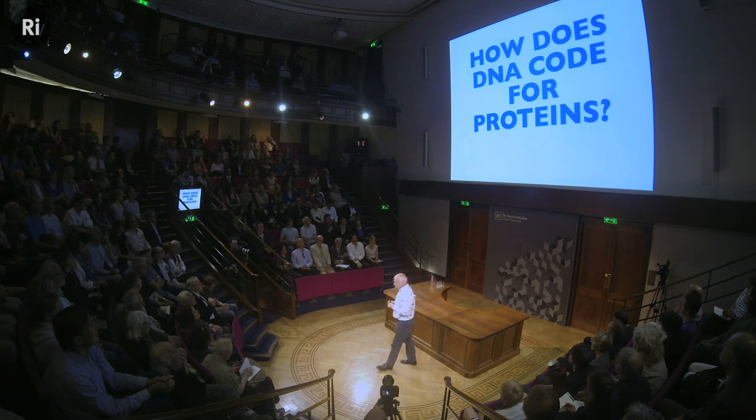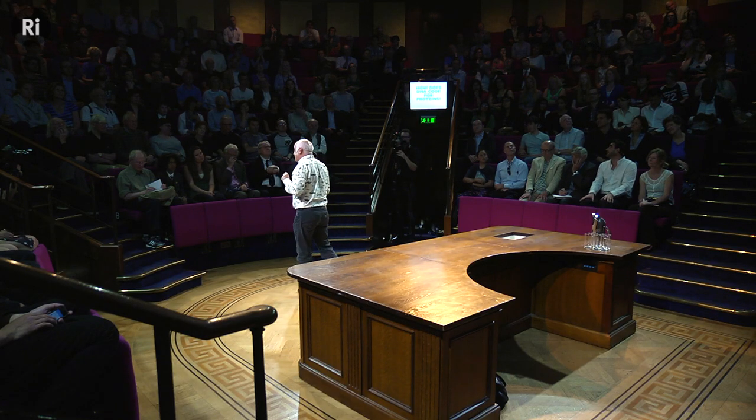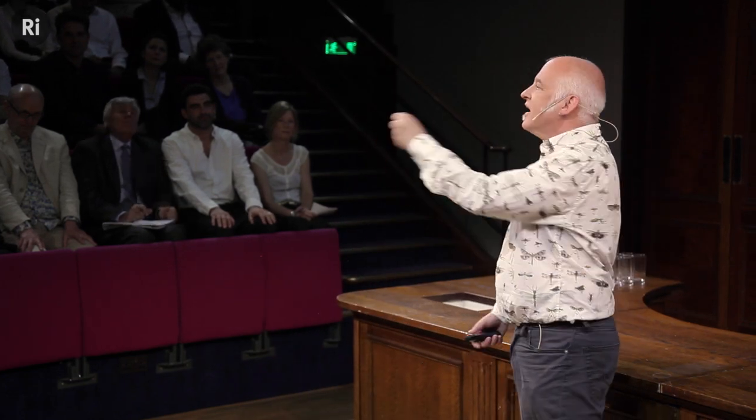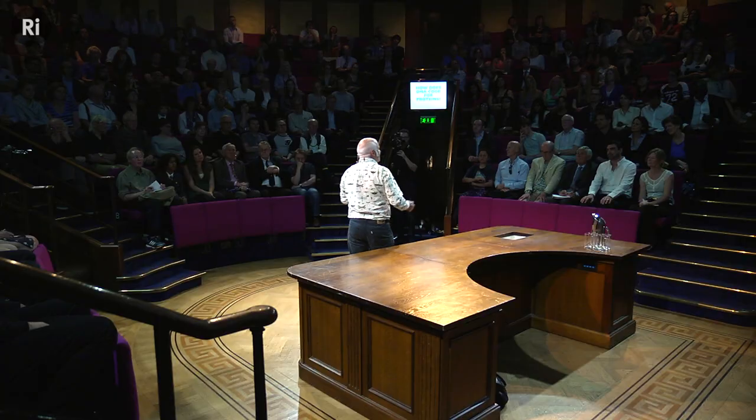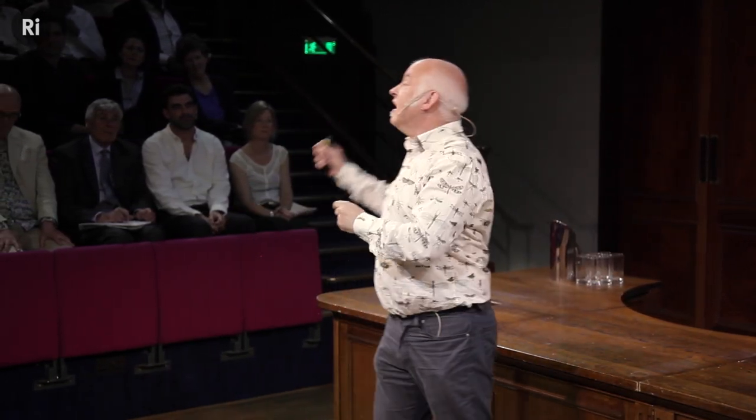Having published this article in Nature in which they talked about the sequence being important, the question then was: how does it work? How does DNA code for proteins? And that's not something that Watson and Crick expected to answer — they weren't interested in it. They were going their separate ways: Crick was going to Brooklyn Polytechnic on a postdoc, having only just finished his PhD, and Watson was going to Harvard. They never really worked together again after this time and weren't expecting to do anything.